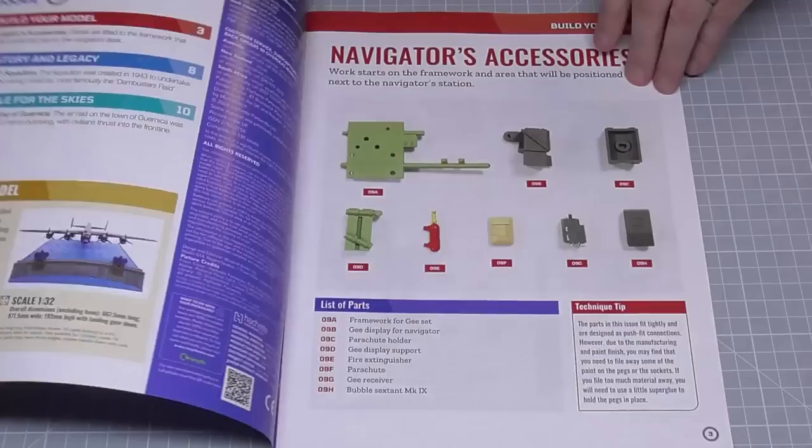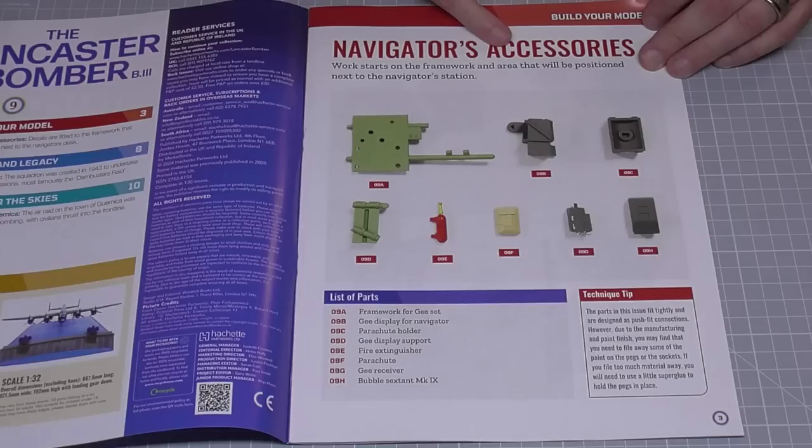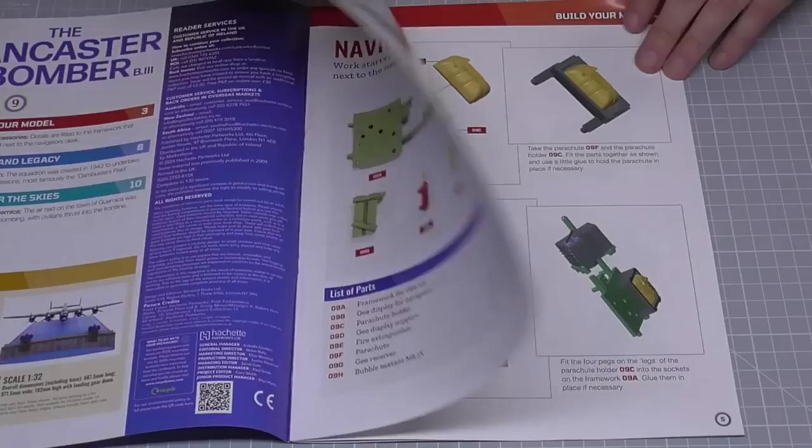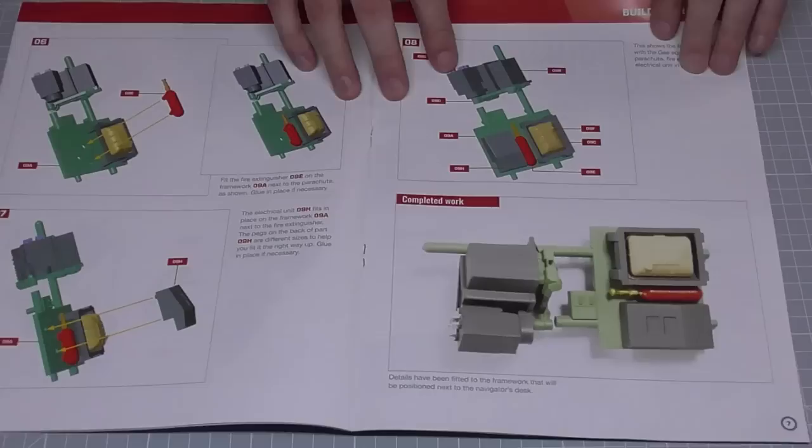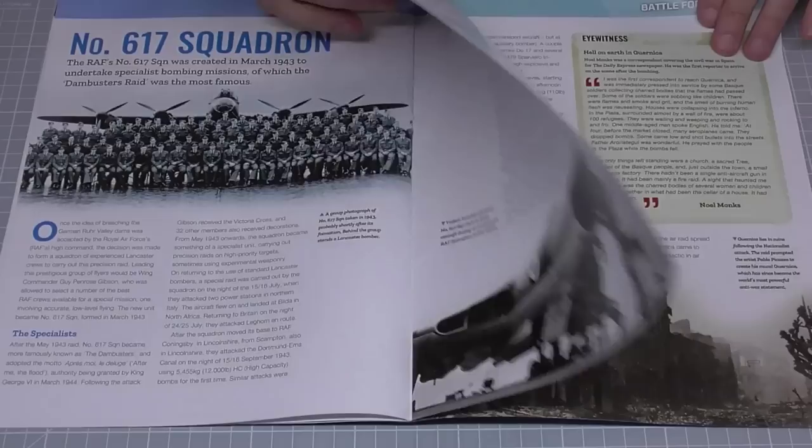So this is stage nine of the Lancaster bomber. As you can see, we've got one, two, three, four, five, six, seven, eight pieces. Work starts on the framework and the area that will be positioned next to the navigator station. These are all the parts, going to need to get our glue out, and it is just slotting things. So by the end of it, this is what that station is looking like.